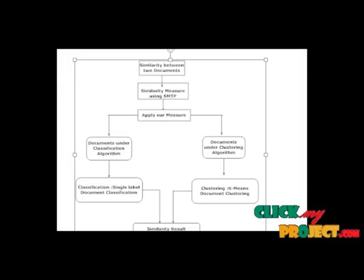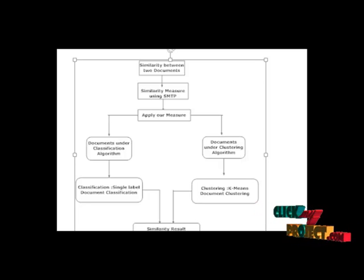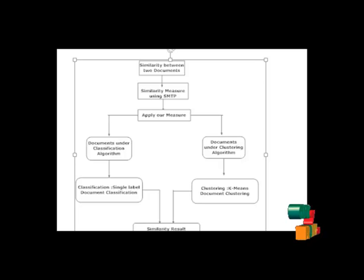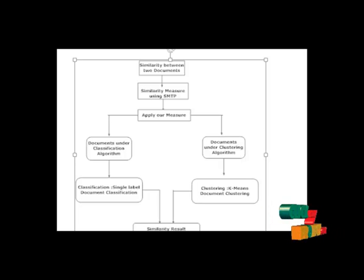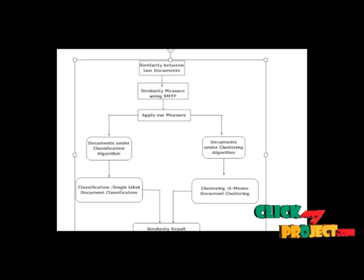In the dataflow diagram, in the first step the user will select the dataset. Our paper suggests the WebKB dataset is used in this project. After selecting the WebKB dataset, it will be divided into four parts — that means testing documents. After selecting the testing documents, a preprocessing method is applied. Finally, we find the similarity between two documents using a similarity formula, and then apply the measure for classification and clustering using SMTP.